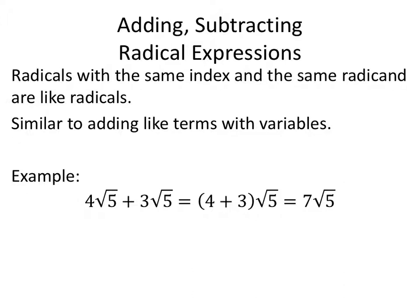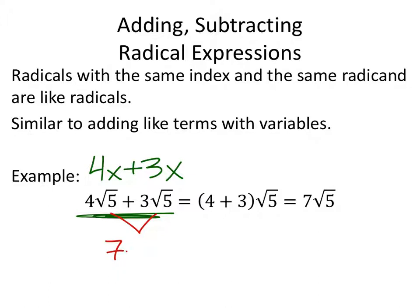So with adding and subtracting radical expressions, we're really just looking at the radical. Like this one right here — if you saw that as 4x plus 3x, you'd feel really good about it because you've done that before. However, now instead of an x, we've got a square root of 5. We're going to combine these pretty much the exact same way.